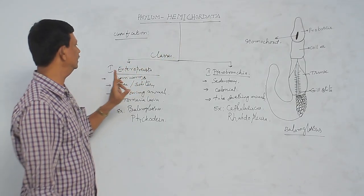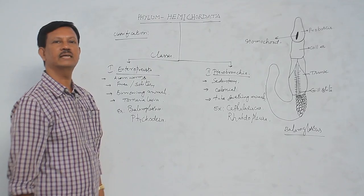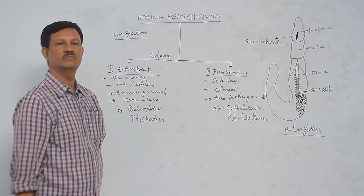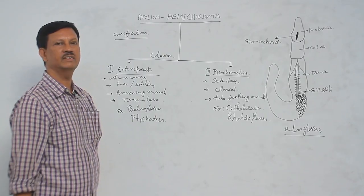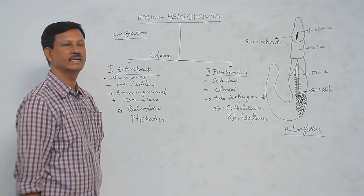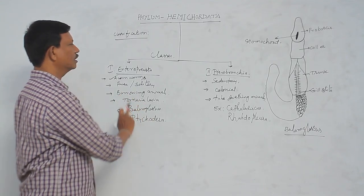First, we have to discuss the Enteroneusta. These are commonly known as the acorn worms. They are free-swimming or free-living animals and some are solitary animals. They are found single and they are burrowing animals.